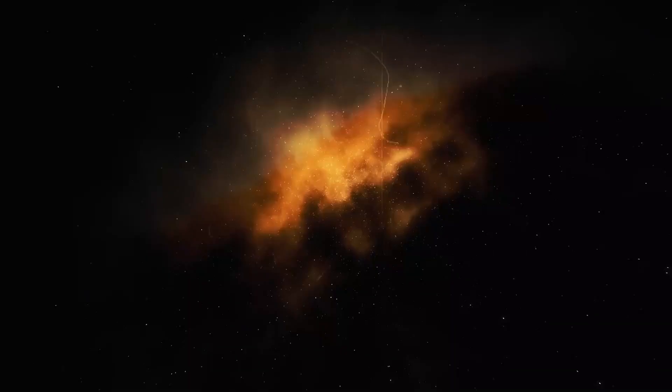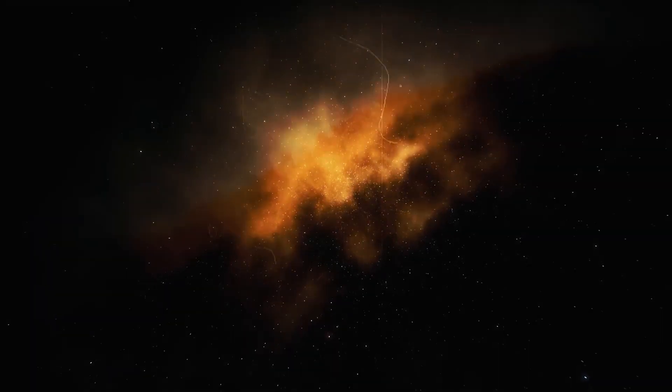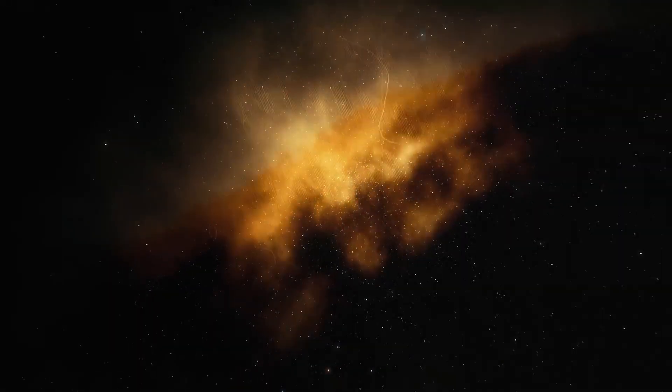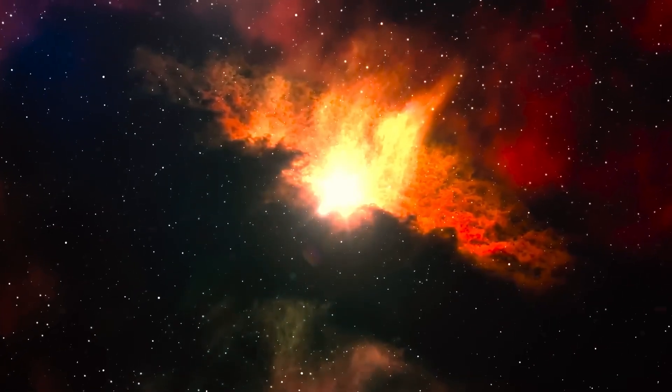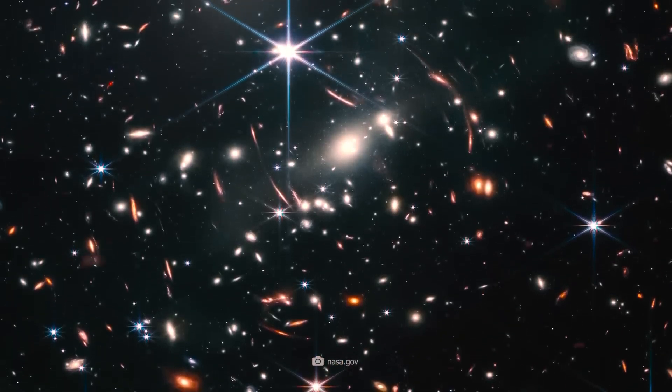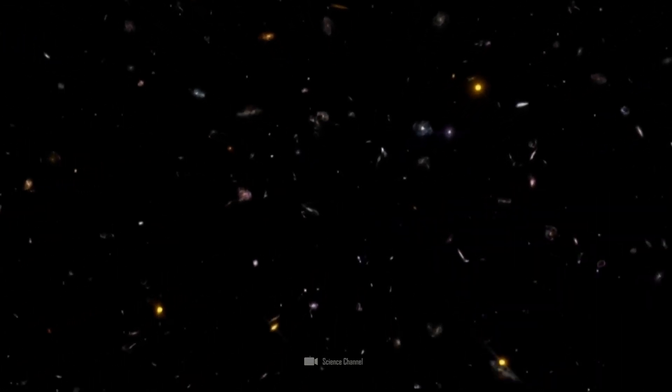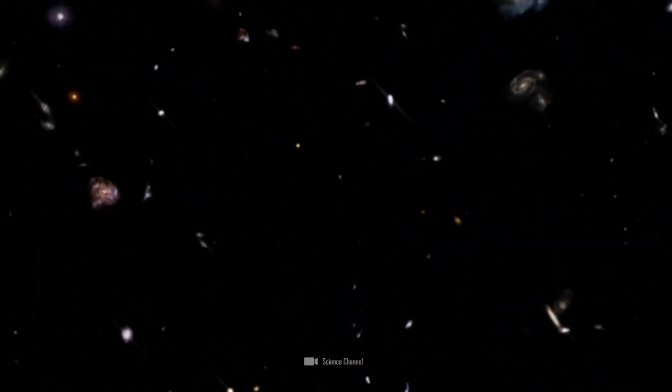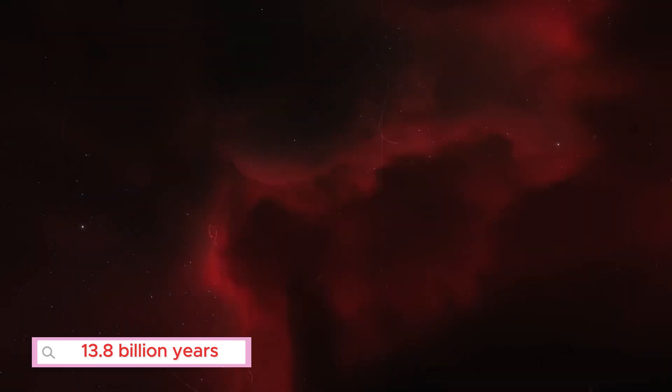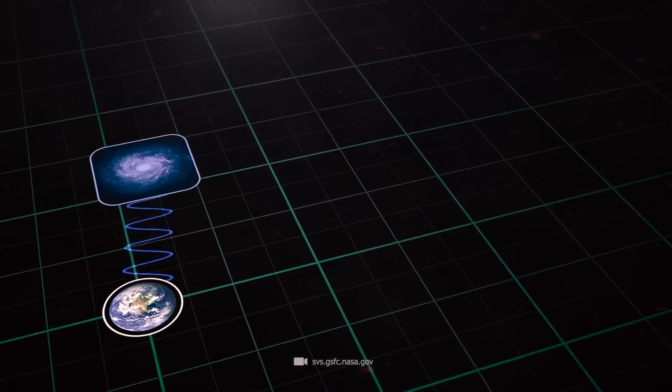Thanks to ever-improving technologies, we have apparently been able to understand the age of the universe more and more reliably. But those who have paid close attention have also found evidence that scientists are guessing more than they know. The age of the universe was corrected three times until we arrived at the current 13.8 billion years, and Webb now shows us that this is also wrong.